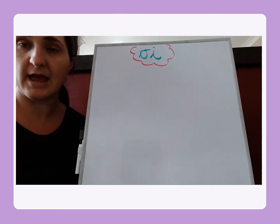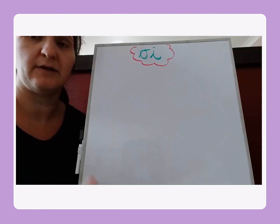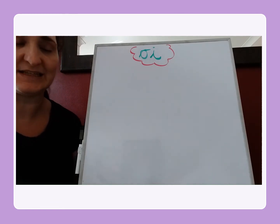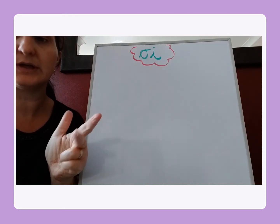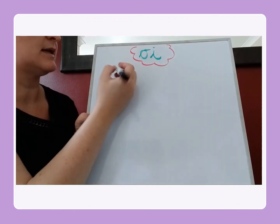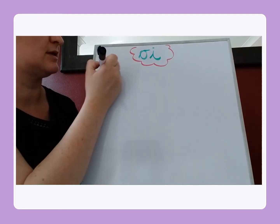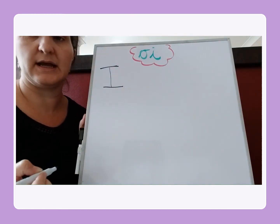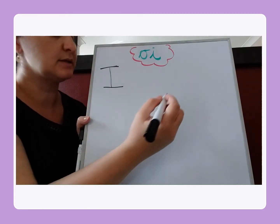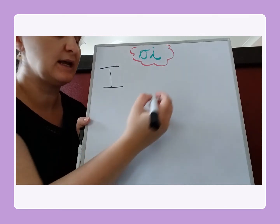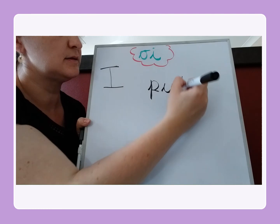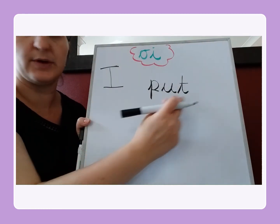Off you go. Have you had a go at writing the sentence yourself? Let's write it together, but let's just remind ourselves of what the sentence is first. I put oil in the car. So the first word is I — that's a tricky word, a word we just need to know, and it's written as a capital I. I put. Finger space. Put. It's a CVC word so we can hear all those sounds: P-u-t. I put oil.